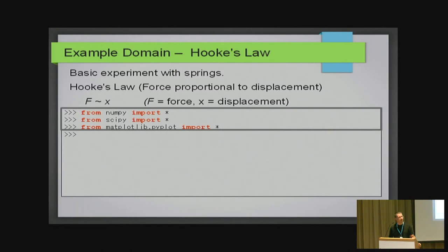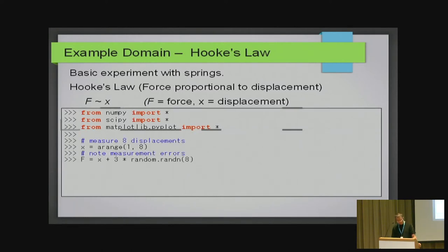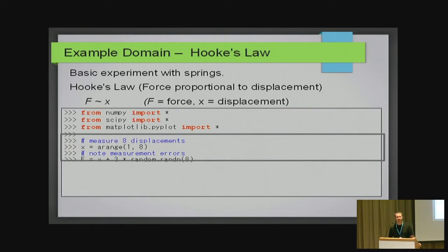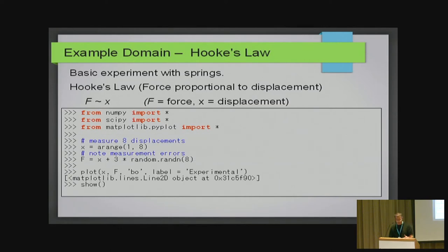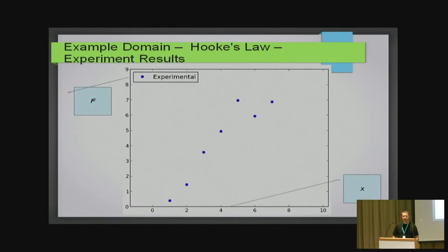I'm going to import some stuff from NumPy and SciPy and some plotting libraries. And the experiment looks like this. I'm writing X equals A range 1 to 8, which means that X gets the points 1, 2, 3, 4, up to 8. Those are the distances we want the spring to lengthen. And F equals X plus some normally distributed noise. Because in the real world, we can't measure things precisely.